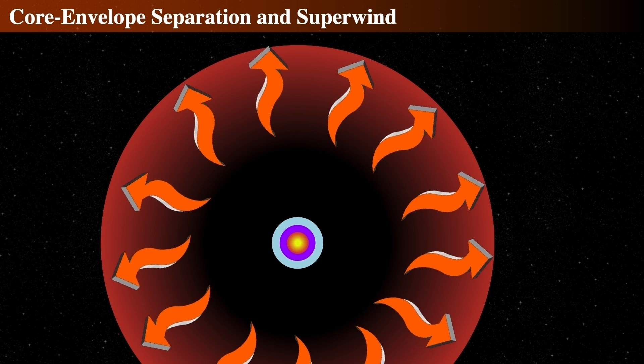The outer envelope is ejected as a fast wind, and by fast we mean the star will lose about 10 to the minus 4th solar masses per year. That's 1% of 1% of a solar mass. The Earth is about 3 times 10 to the minus 6th solar masses, so such a star will lose about 100 Earth masses of material every year.